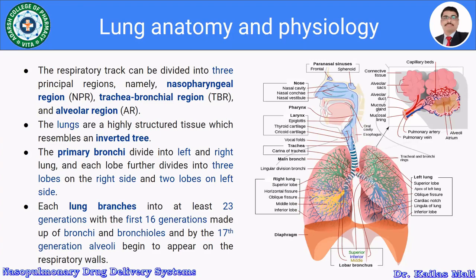The primary bronchi divide into the left lung and the right lung. Each lobe further divides into three lobes on the right side and two lobes on the left side. Each lung branches into at least 23 generations, with the first 16 generations made up of bronchi and bronchioles, and by the 17th generation alveoli begin to appear on the respiratory walls.